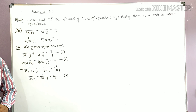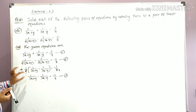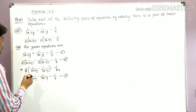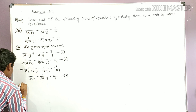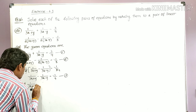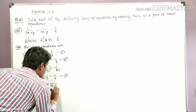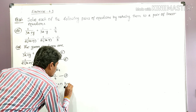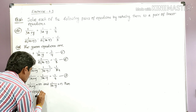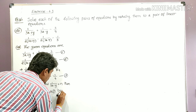Now we observe the terms in both equations. The first terms of both equations involve 1/(3x + y) and 1/(3x − y). So let us substitute: let 1/(3x + y) = m and 1/(3x − y) = n. Then equations 1 and 3 become linear equations in m and n.